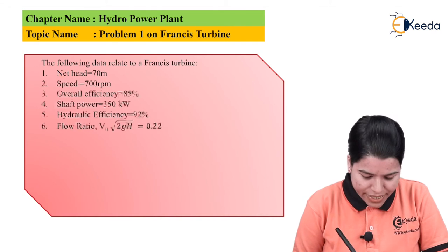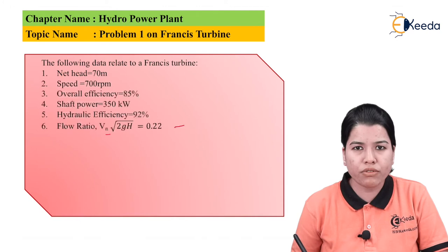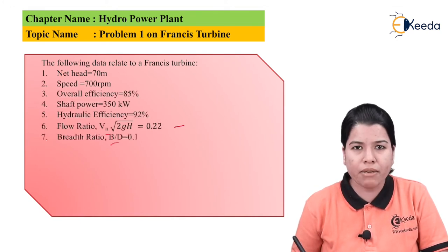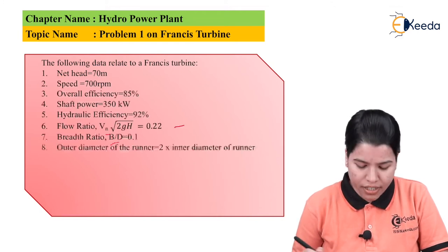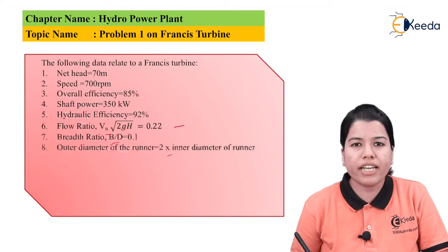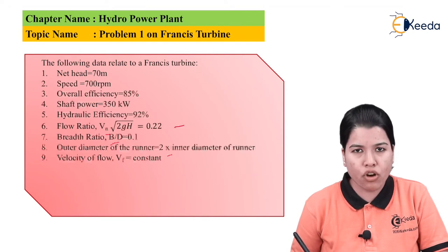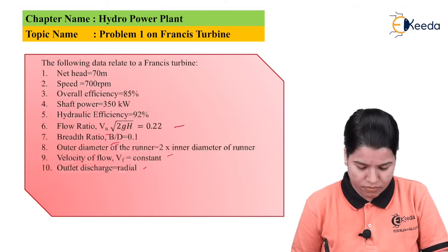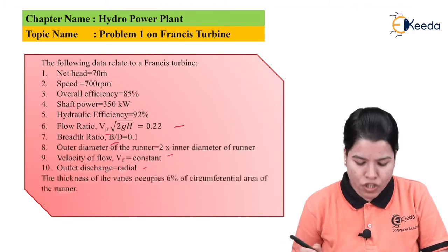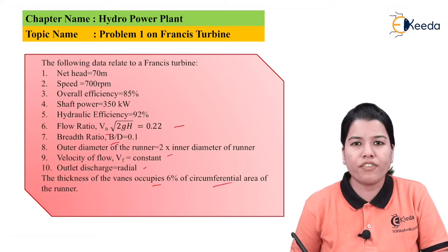Flow ratio — that is Vn multiplied by under root of 2gH — is equal to 0.22. Breadth ratio, that is B divided by D, is equal to 0.1. The outer diameter of the runner is equal to twice the inner diameter of the runner. Velocity of flow Vf is constant. Outlet discharge is radial. The thickness of vanes occupies 6% of the circumferential area of the runner.